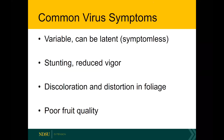Unfortunately, viruses can be highly variable. They will express themselves differently based on the overall health of the plant and cultivar interactions. Depending on overall plant health, they could be latent or symptomless, but oftentimes the plant will be stunted with reduced vigor, leading to poor fruit quality. If the virus does express itself beyond just stunting, it often has discoloration or distortion in foliage that could be confused with a nutrient disorder or herbicide drift.